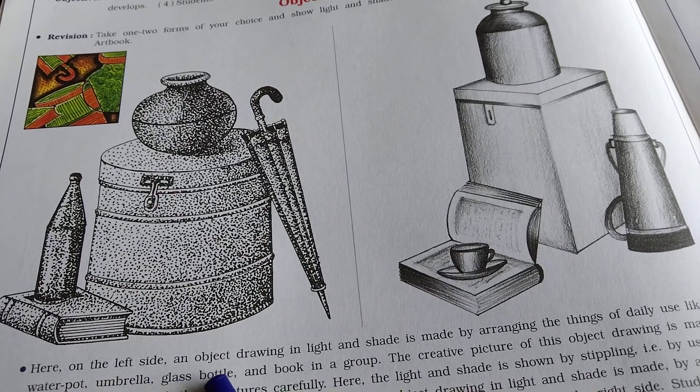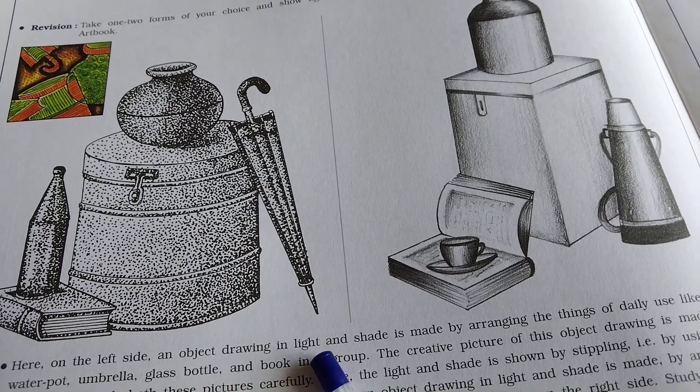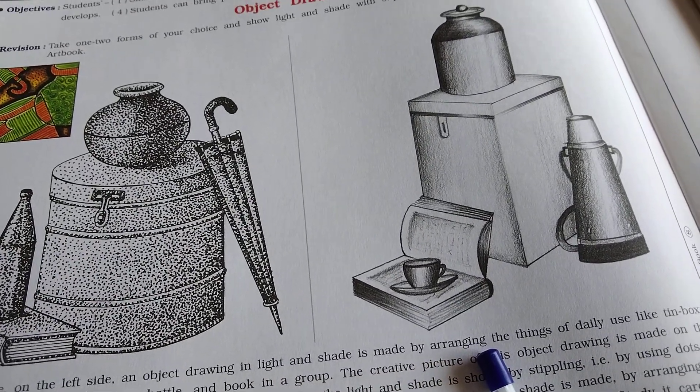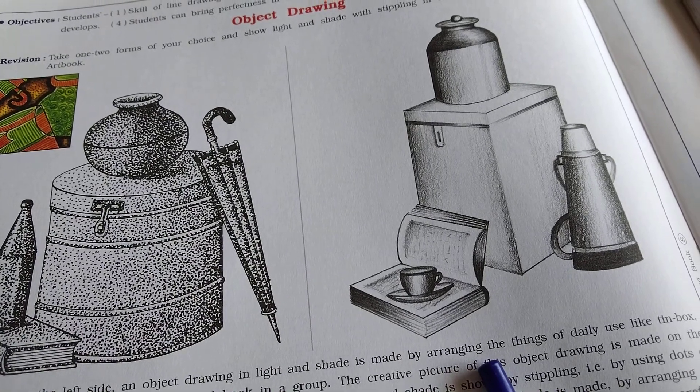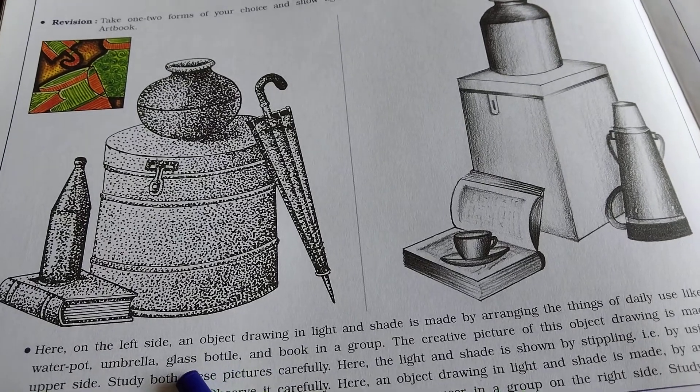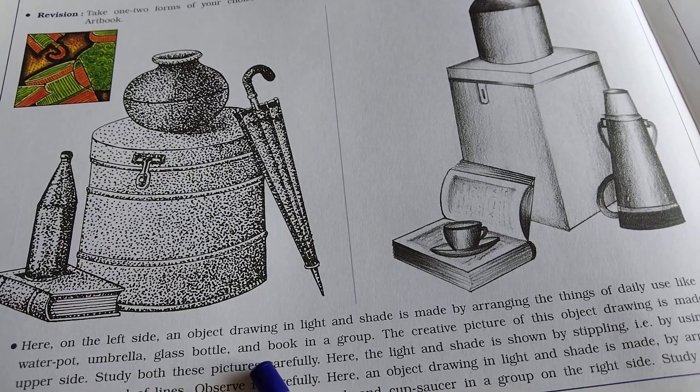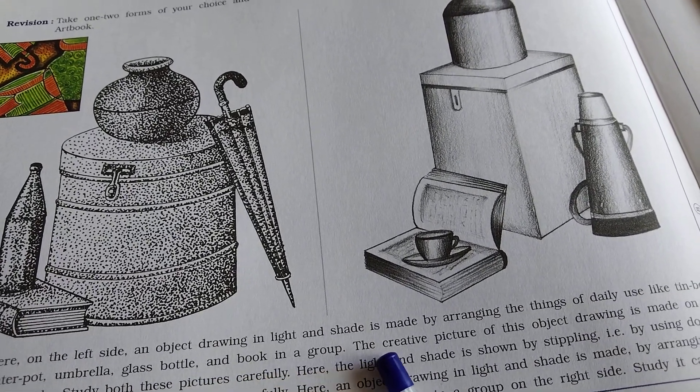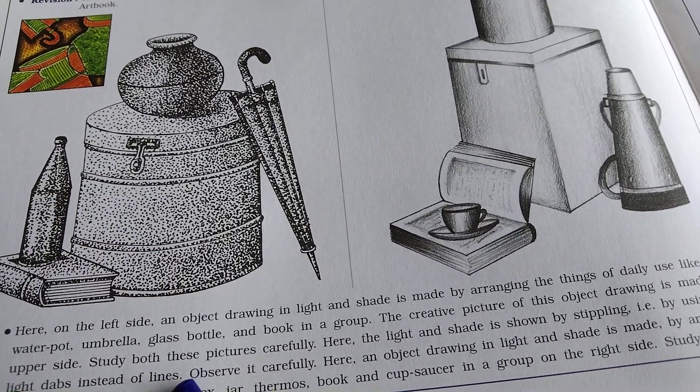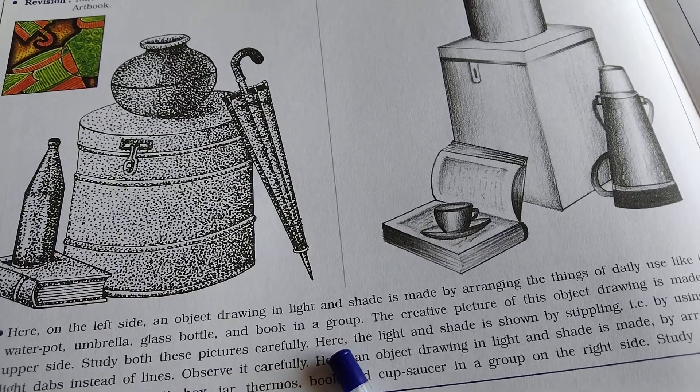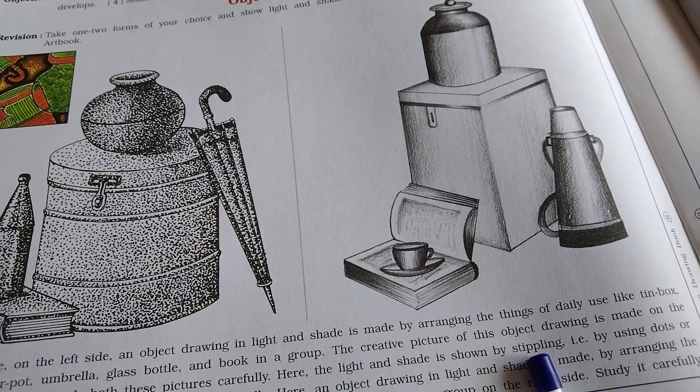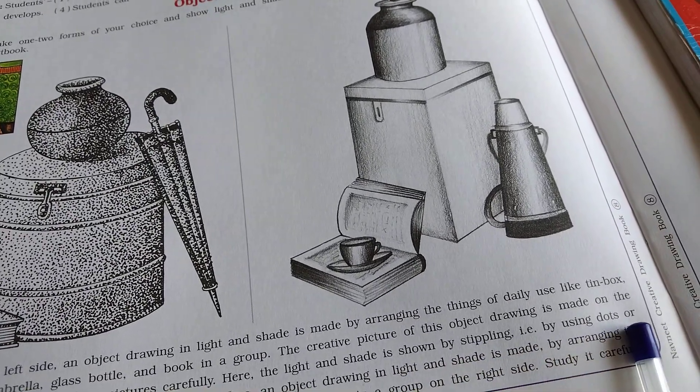On the left side, an object drawing in light and shade is made by arranging things of daily use like tin box, water pot, umbrella, glass bottle, and book in a group. The creative picture of the object drawing is made on the upper side. Study both these pictures carefully. Here the light and shade is shown by stippling, by using dots.